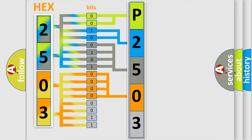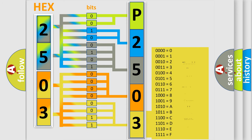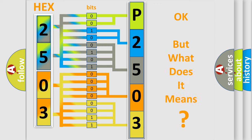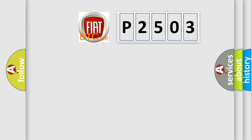A single byte conceals 256 possible combinations. We now know in what way the diagnostic tool translates the received information into a more comprehensible format. The number itself does not make sense to us if we cannot assign information about what it actually expresses. So, what does the diagnostic trouble code P2503 interpret specifically for FIAT car manufacturers?